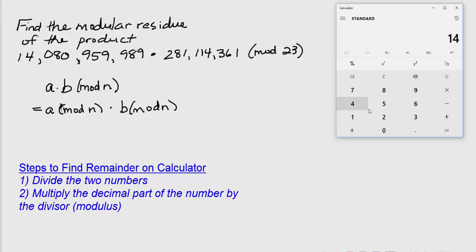So in this case, we have 14,080,959,989. We're going to divide that by 23, and we're going to disregard this entire whole number part. So we're only going to look at the 0.6956522, and we're going to multiply that by the modulus. And that tells us that the remainder is 16.